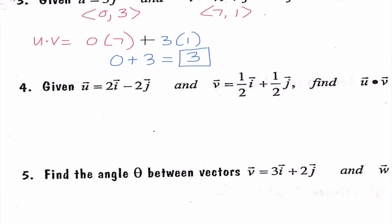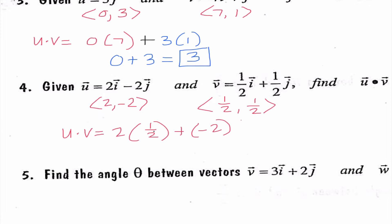Hopefully at this point this is seeming a little bit repetitive, and that's a good thing because that means you're getting it. Number 4 looks scary because we have fractions, but vector u is (2, −2) and vector v is (1/2, 1/2). So if I'm finding the dot product, I would do 2 times 1/2, plus −2 times 1/2. So I get 1 + (−1), which is 0. We don't need to say they're orthogonal because it's not asking us that — 0 is a perfectly fine answer.